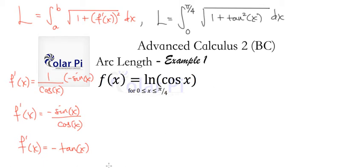We remember from our trig identities that 1 plus tan squared x is just secant squared x. So this is going to be 0 to pi over 4 of the square root of secant squared x dx. But the square root of secant squared x is just secant x, so this is secant x dx.